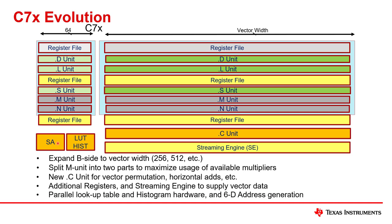SA stands for the streaming address generator. It can help limit the number of instructions required to calculate an address used for a load or store instruction. Suppose you have a loop that's going through memory in some interesting way and it takes a few instructions to compute that address. Instead of having those instructions inside the loop, you can configure an SA before the loop so that inside the loop you just say 'SA advance' and it will do all those operations for you — and it's always good to do that with important loops in the application.